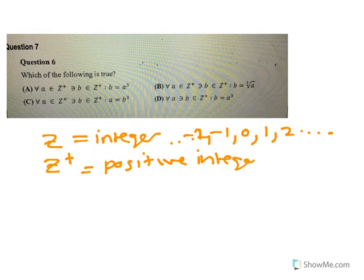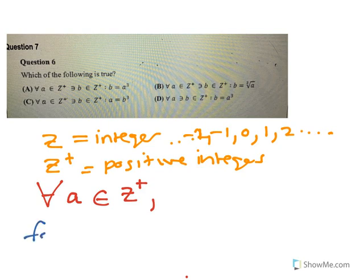They're only talking about the positive integers. So all of these start with for all a element of Z plus, and they actually should have a comma there. So what that means is for all a, that is a positive integer.